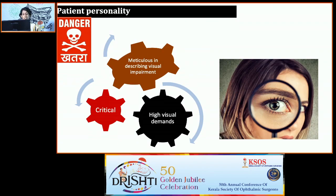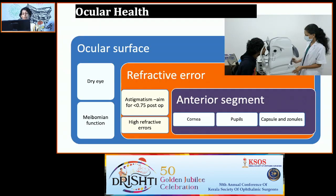Beware of difficult patient personalities — those who are highly critical, have high visual demands, or are extremely meticulous in describing visual impairment. For ocular health assessment, evaluate for dry eye, meibomian gland dysfunction, and using the Barrett's toric IOL calculator, determine if a toric IOL is needed. Avoid extremely high refractive errors, identify subtle anterior segment pathologies, hidden corneal dystrophies, scotopic pupil size, and subtle zonular or capsular issues such as pseudo-exfoliation.